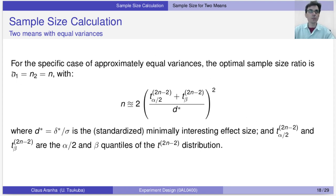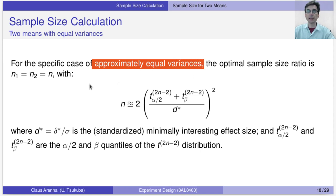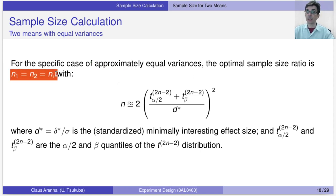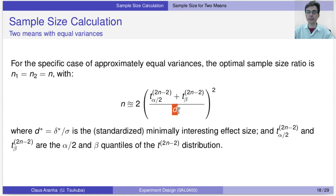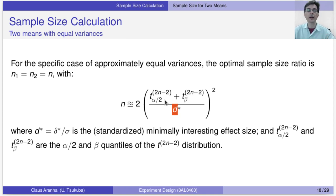If the variances are approximately equal, then we'll have similar sample sizes for both, and we calculate it like this. We're doing a t-test for two samples, and n will be approximately equal to a formula that depends on alpha, beta, and the difference. You can also see something interesting: this formula is an iterative formula because we have n on both sides, making it very hard to combine them directly. I'm not going to go into the details of how to calculate this, but it's interesting to notice what depends on the sample size and how the different parts of our experiment design are connected together.